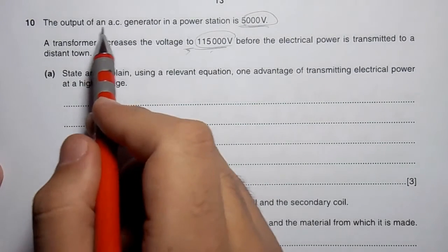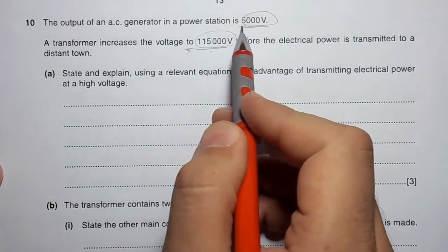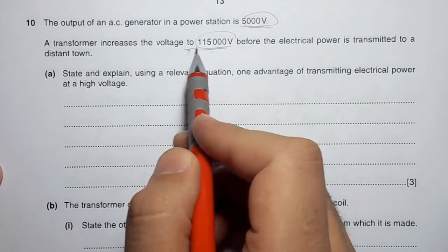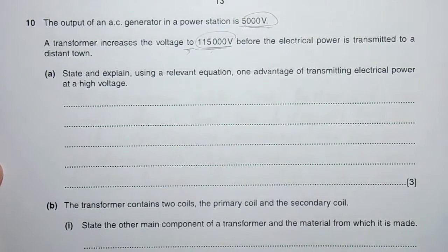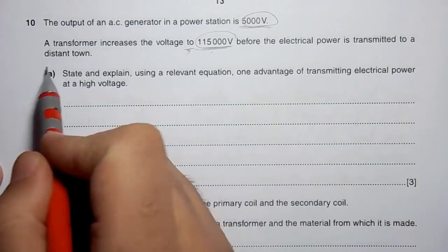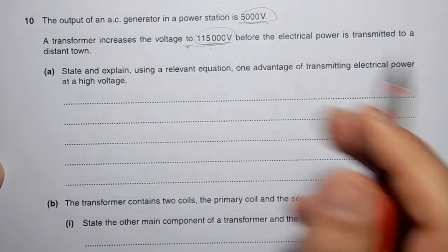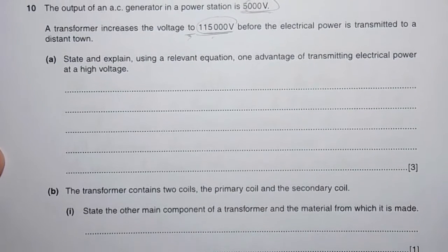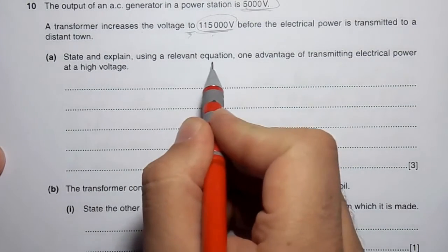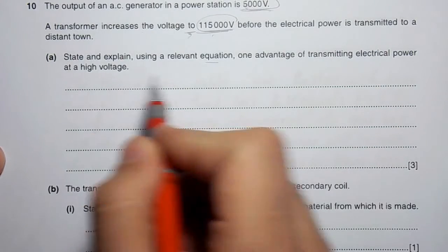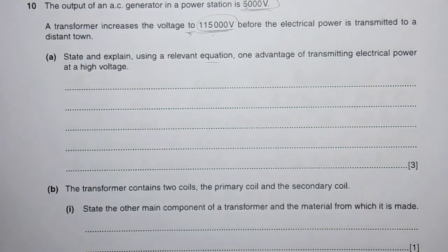The output of an AC generator in a power station is 5000 volts. A transformer increases the voltage to 115,000 volts before the electrical power is transmitted to a distant town. State and explain using a relevant equation one advantage of transmitting electrical power at a high voltage. Let's understand how this scenario works.